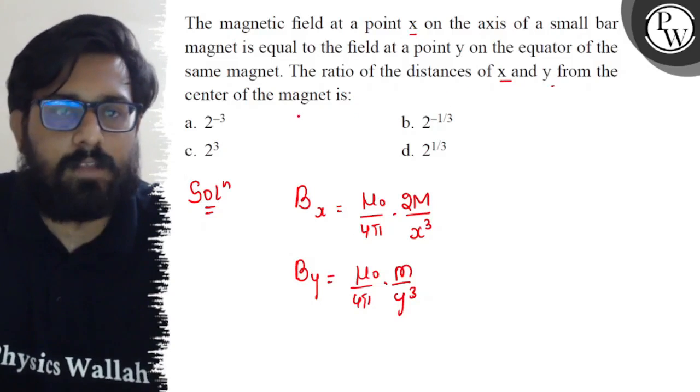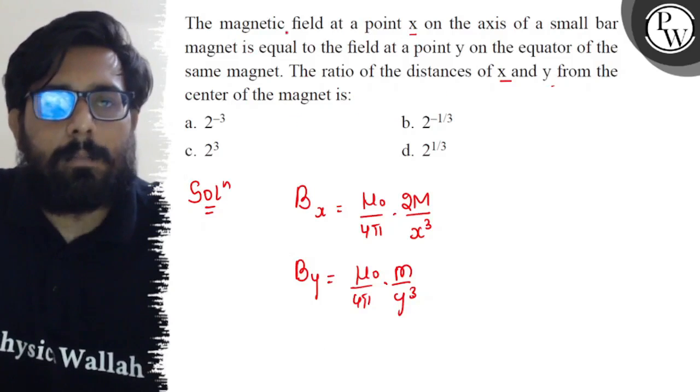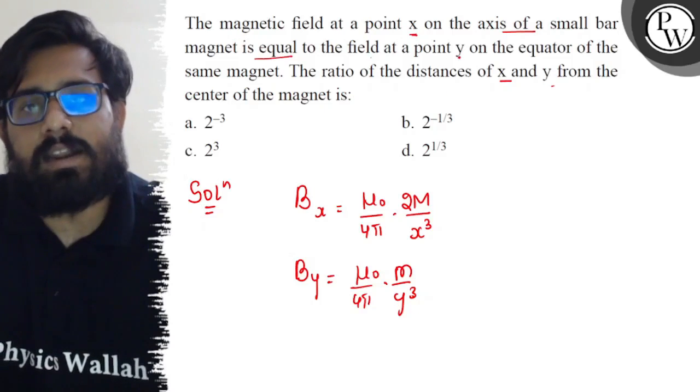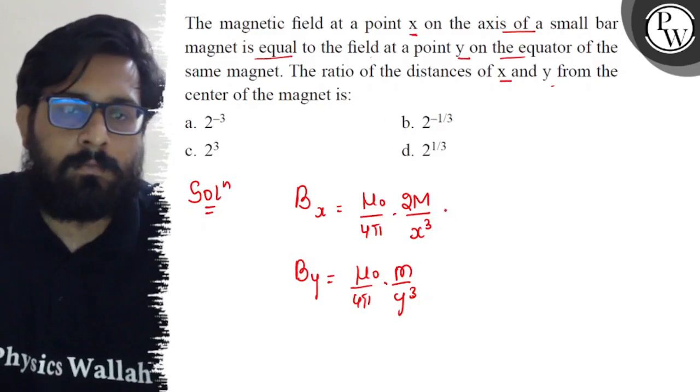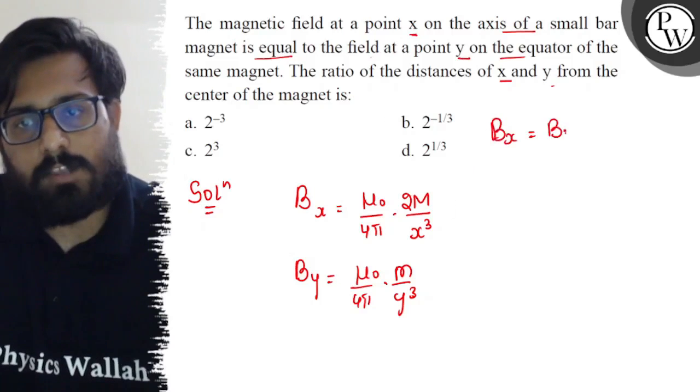It is said that the magnetic field at a point x on the axis is equal to the field at a point y on the equatorial position. So B_x equals B_y as per the question, it is given.